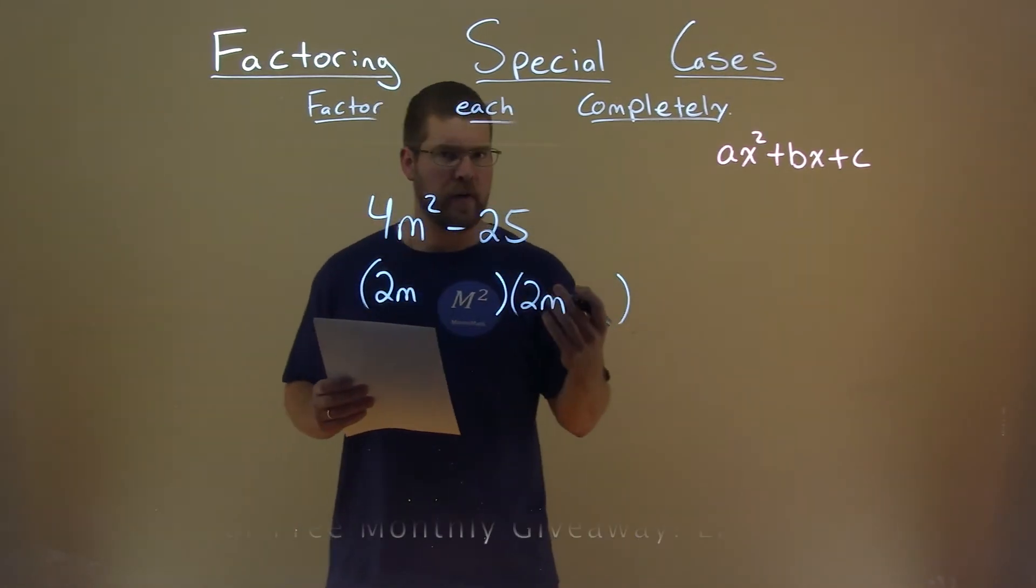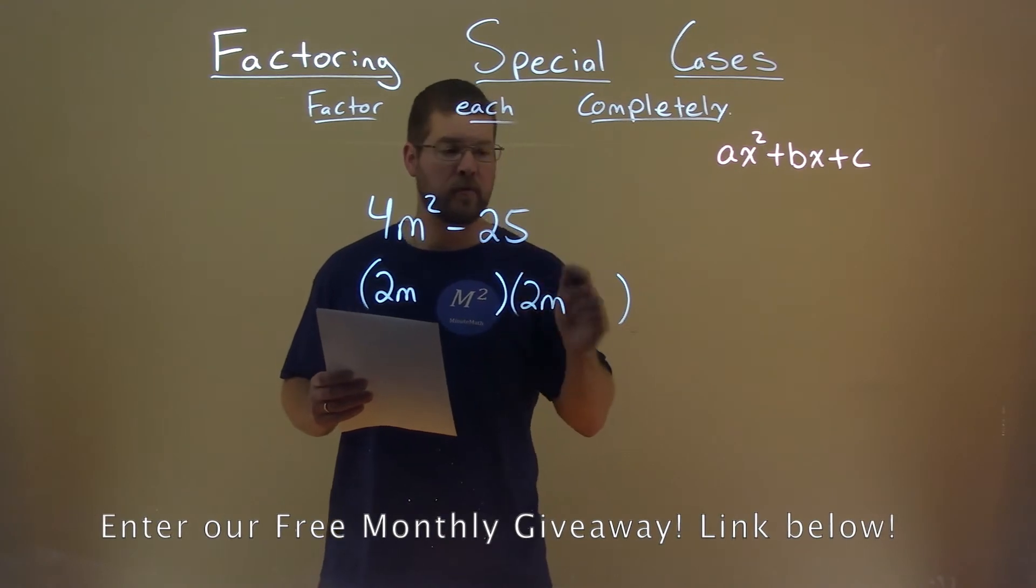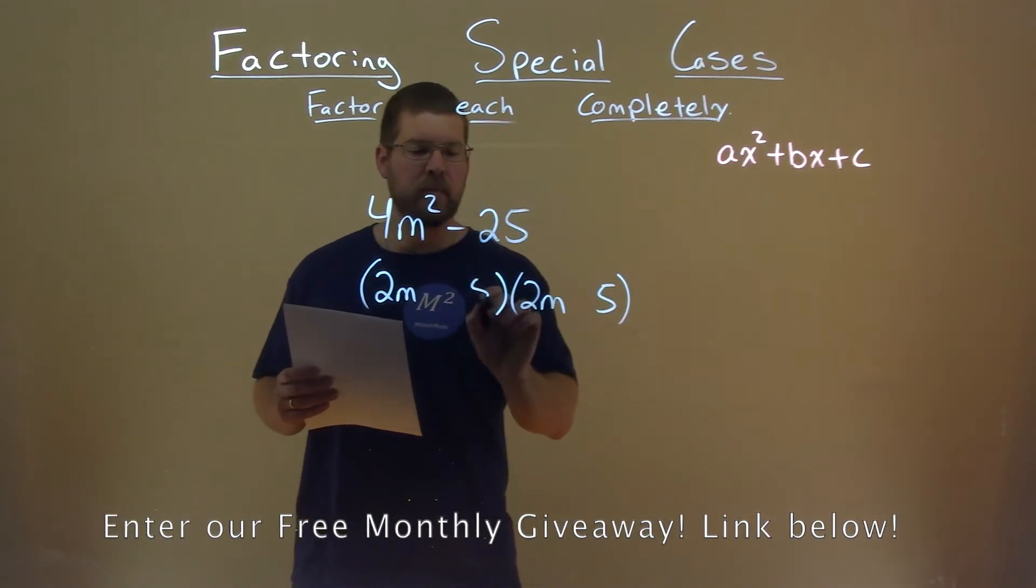Now, what's the square root of 25? Well, the square root of 25 is 5. Put a 5 here, and put a 5 here.